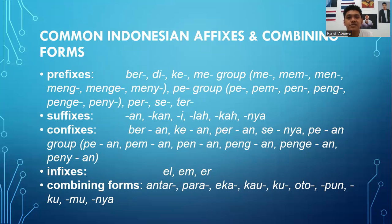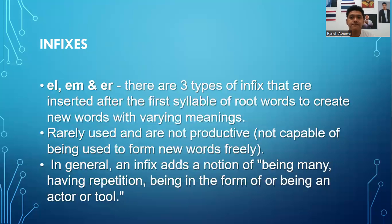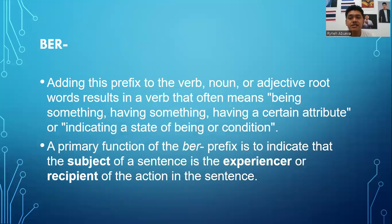So for this episode, I'm going to discuss the prefix ber first. Now ber, when added as a prefix to a verb, noun, or adjective root word, results in a verb which often means to be something, having something, having a certain attribute, or indicating a state of being or condition.